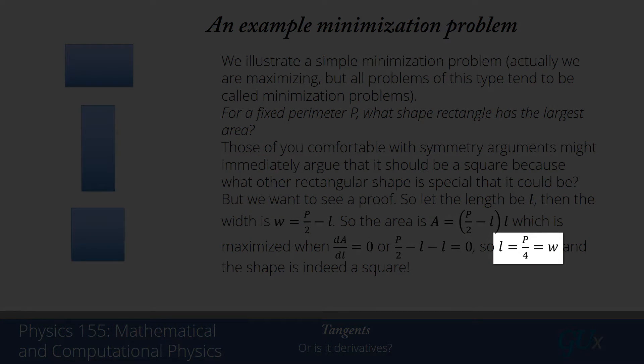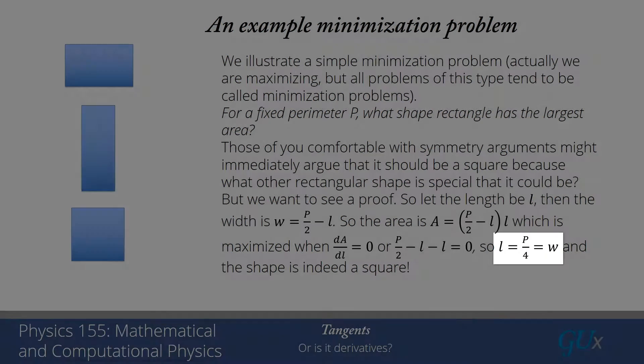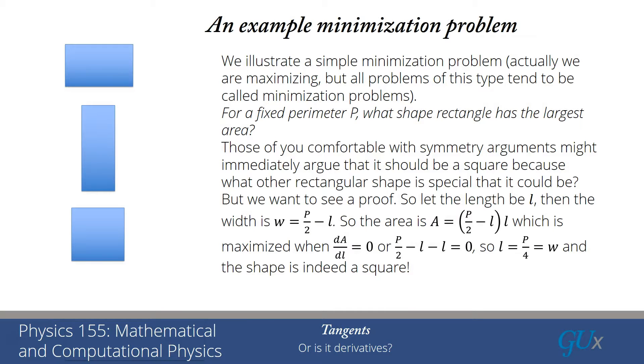And so I find l equals w, and that is, of course, the definition of what a square is. So we can prove very directly by using this notion of a minimization problem, or a maximization problem, by setting a derivative equal to 0, that the maximal area for any rectangle with a fixed perimeter will be the situation when the rectangle is chosen to be a square.